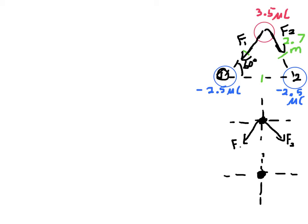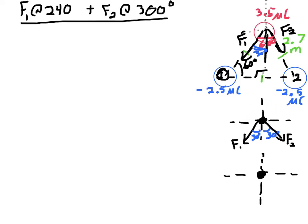I need to know angles. Equilateral triangle means every angle is 60 degrees. If I put an x-y axis on this, I know this entire angle is 60 degrees. Drawing the y-axis down, the angle between F1 and the negative y-axis is 30 degrees, and the same on the other side. Going around to the positive x-axis: F1 is at 270 minus 30, which gives 240 degrees, and 270 plus 30 gives 300 degrees for F2. So F1 is at 240 degrees and F2 is at 300 degrees.